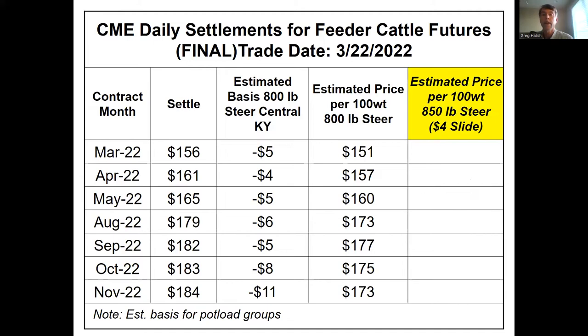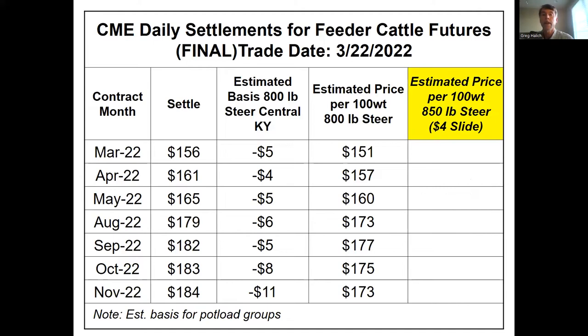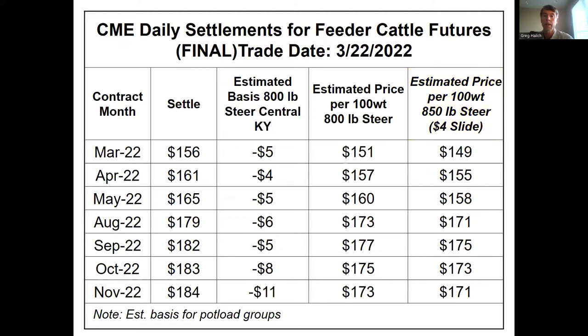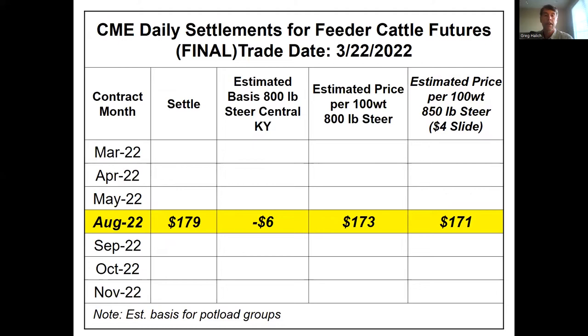In this situation we're estimating an 850-pound steer. Going from 800 to 850 pounds is a half a hundredweight — 50 pounds divided by 100. So we would use half that price slide since we're going up in weight, subtracting $2 from each of those months. We're planning to sell early August, so we use the August contract with the August basis of minus $6 for pot load. That gives us an estimated price of $1.73 for the 800-pound steer and $1.71 for the 850-pound steer.